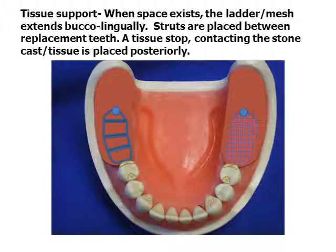Tissue stops are used as terminal metal stops. These help in stabilizing the framework during try-in and processing. Occasionally, tissue stops may be fabricated with cold-cure acrylic if they do not contact the stone cast.